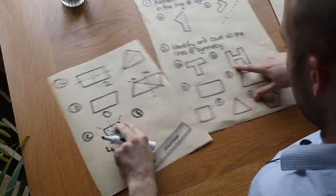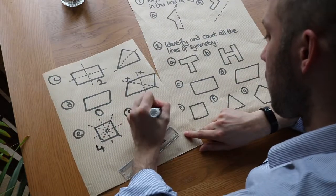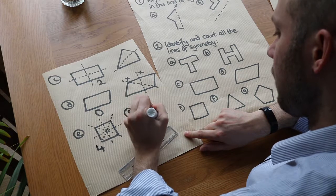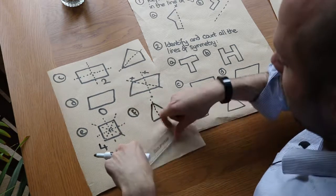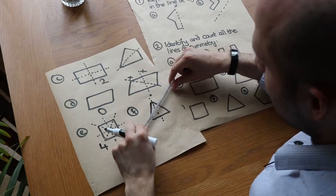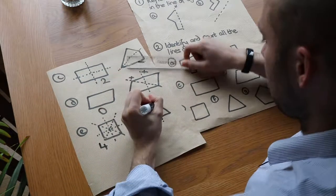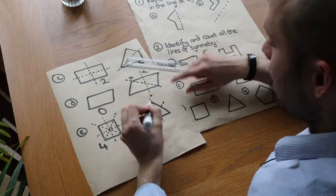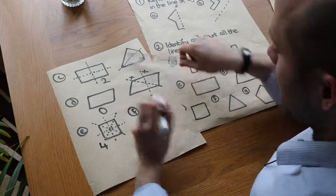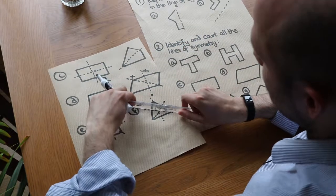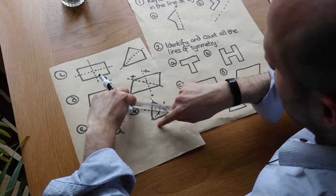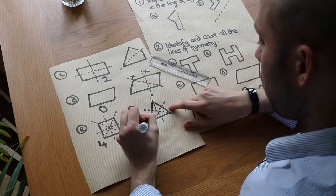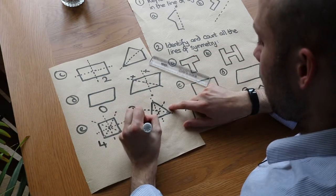For shape F, we've got an equilateral triangle. There's a line of symmetry here, and I could also put a mirror here and see the same on either side — flipped over. And similarly a third one here. So the equilateral triangle has three lines of symmetry.